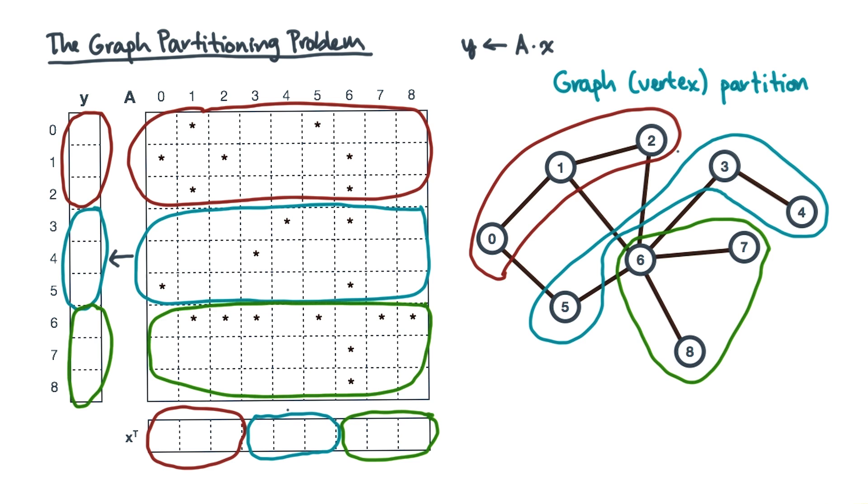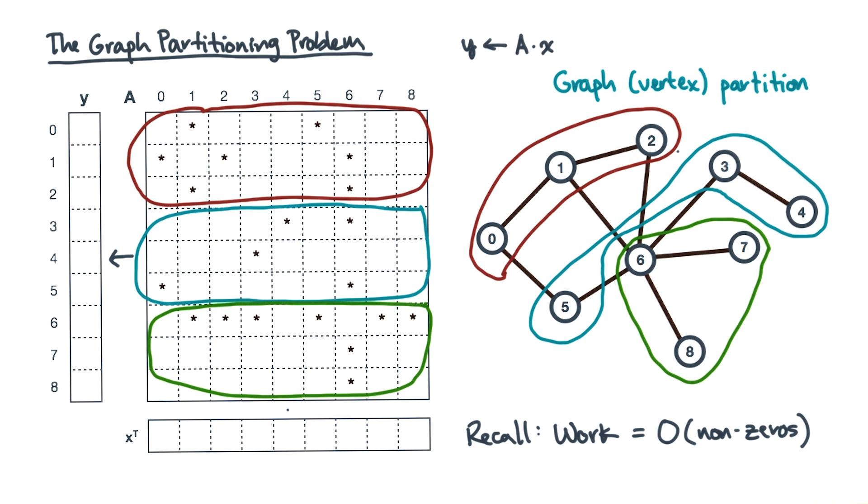Now, the amount of work in a sparse matrix vector multiply is proportional to the number of non-zeros. So, when you divide up the rows, you might want to do so in a way that balances the number of matrix non-zeros per partition. So that's one goal.